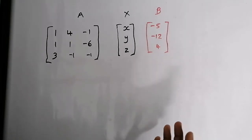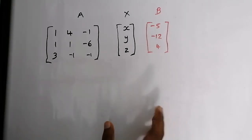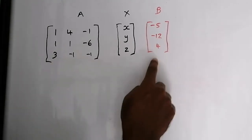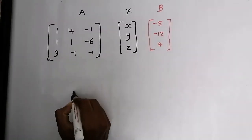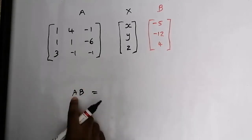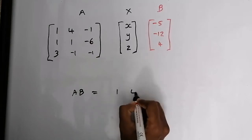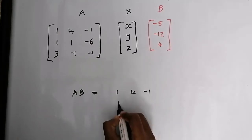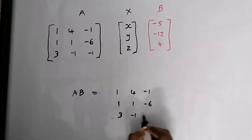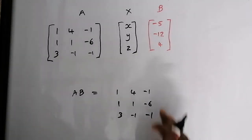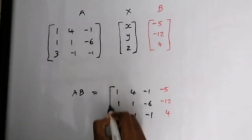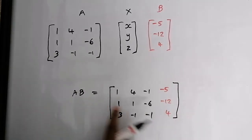The next step is to write the augmented matrix. The augmented matrix means joining matrix A and matrix B. The augmented matrix AB is formed by writing matrix A — that is 1, 4, minus 1; 1, 1, minus 6; 3, minus 1, minus 1 — and then appending matrix B with constants minus 5, minus 12, and 4. This is our augmented matrix AB.